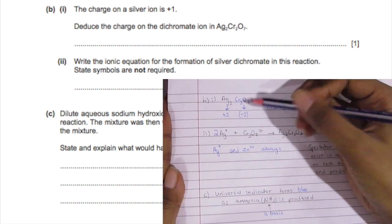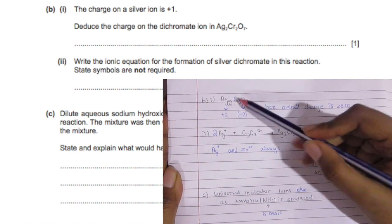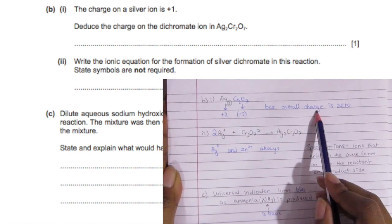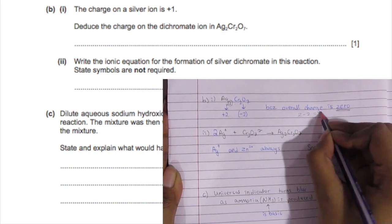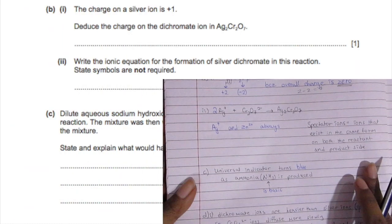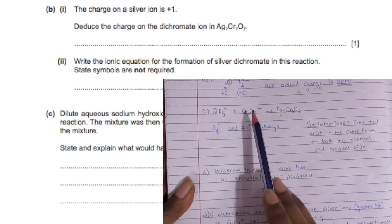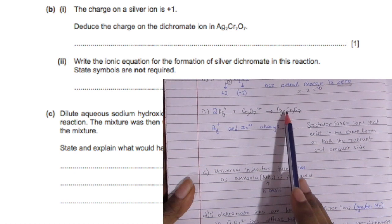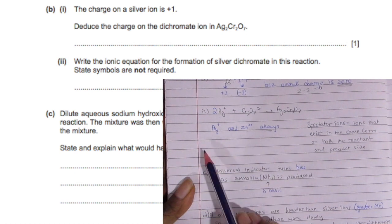The charge on the silver ion is +1, and there are two of them, so it totals to +2. The dichromate ion is Cr2O7, and the overall charge is zero, so it has to be -2 because two minus two is zero. For the ionic equation, make sure it's balanced and only using ions that actually react.